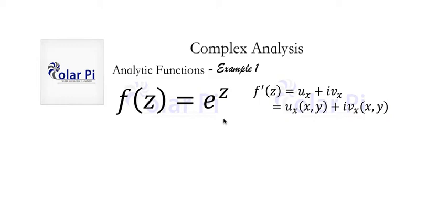In the derivation of the Cauchy-Riemann conditions for checking whether or not a certain function of a complex variable is analytic, we saw that there are two formulas by which we can find f prime of z.